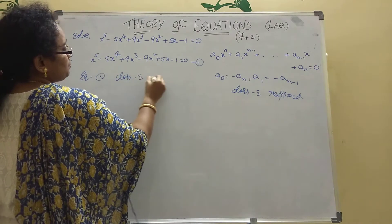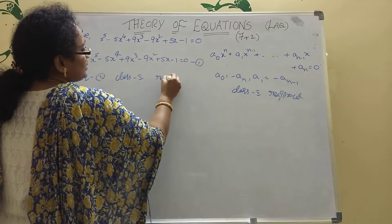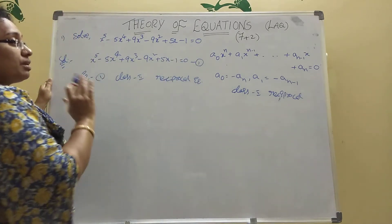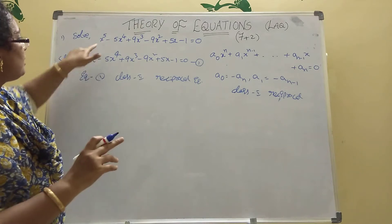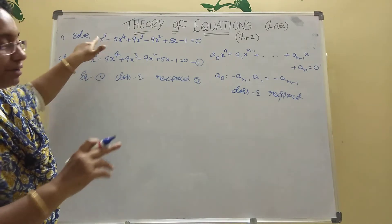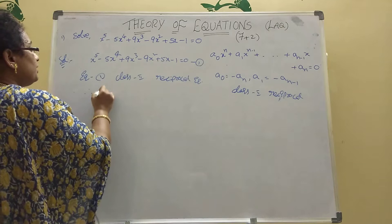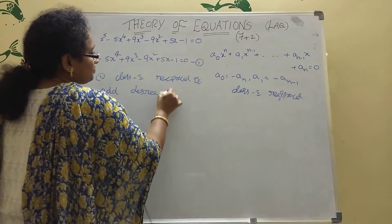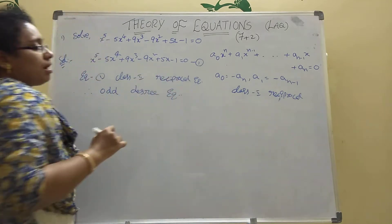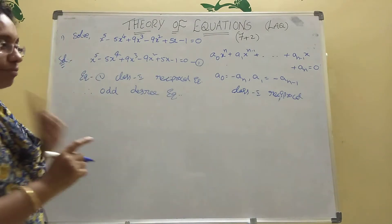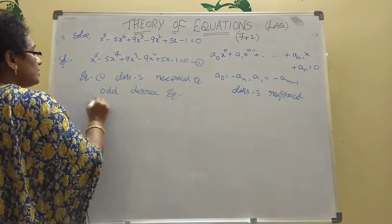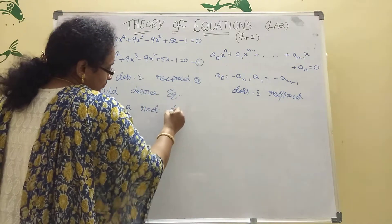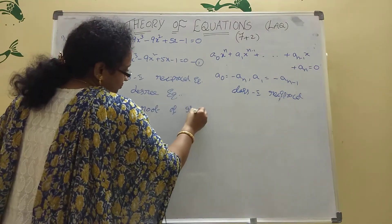Class 2 reciprocal equation. Then Class 2 means here — odd degree or even degree? See here power starts — odd. Here it is an odd degree equation. Odd degree equation means here +1 will be 1 root. So 1 is a root of the given equation.